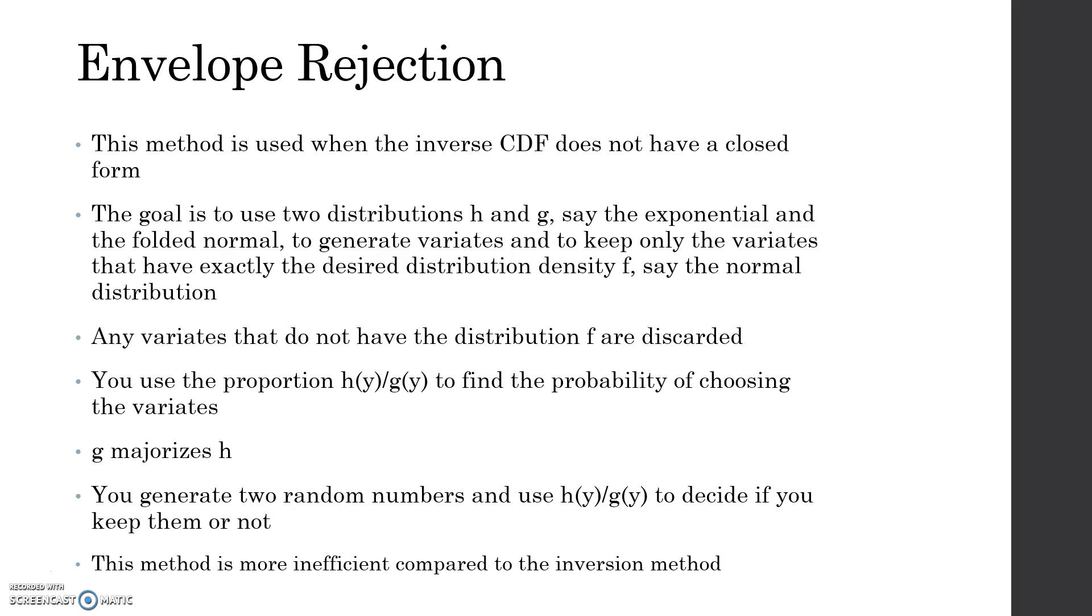Any variance that don't have the distribution F are discarded and not used. You use this proportion H of Y over G of Y to find the probability of choosing variance, and these Y's are random numbers that you generate. G majorizes H. You generate two random numbers and use this proportion to decide if you keep them or not. This method is generally more inefficient compared to the inversion method because you have to generate more random variables and use more steps to get to the final answer.